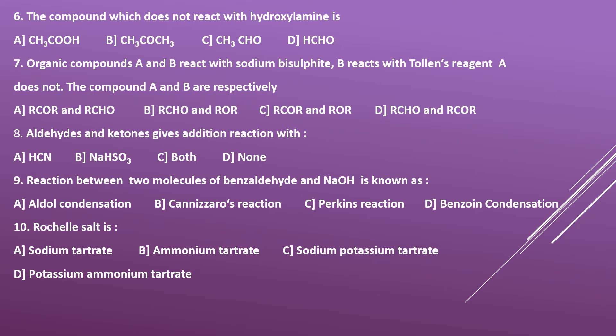Question nine: the reaction between two molecules of benzaldehyde and sodium hydroxide is known as — options: A) aldol condensation, B) Cannizzaro reaction, C) Perkin reaction, D) benzoin condensation. Benzaldehyde doesn't have alpha hydrogens, so aldol condensation is not possible. The right answer is B, Cannizzaro reaction, in which alpha hydrogen is not required.